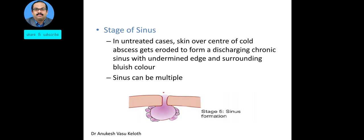The final stage is the stage of sinus formation, usually seen in untreated cases. The skin over the center of the cold abscess eventually erodes to form a discharging chronic sinus with an undermined edge and surrounding bluish discoloration. In some cases, especially in tuberculous lymphadenitis, the sinus may be multiple. The superficial portion of the collar stud abscess directly communicates outwards at this stage.